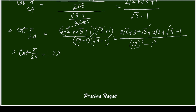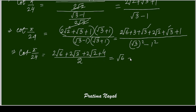Dividing each term by 2 gives √6 + √3 + √2 + 2. Since 2 = √4, we can write the result as √6 + √3 + √2 + √4, which is exactly the form asked in the question. Hence it is proved.